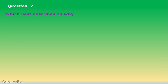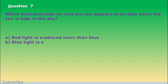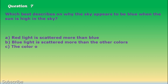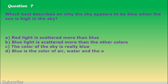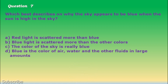Question number 7. Which best describes why the sky appears to be blue when the sun is high in the sky? a. Red light is scattered more than blue. b. Blue light is scattered more than the other colors. c. The color of the sky is really blue. d. Blue is the color of air, water, and other fluids in large amounts. The correct answer is letter b. Blue light is scattered more than the other colors.